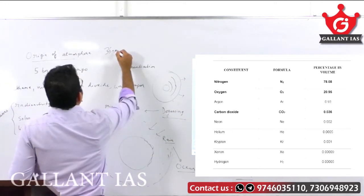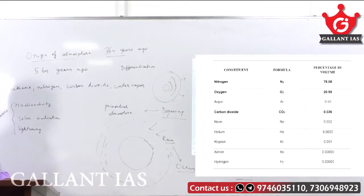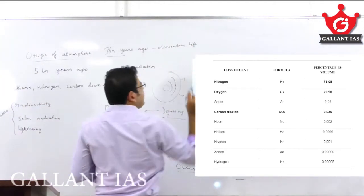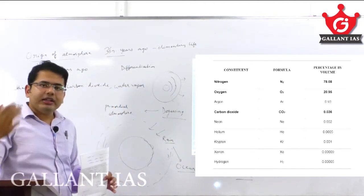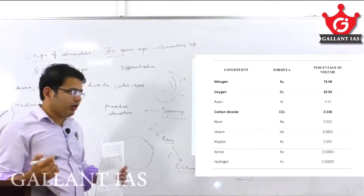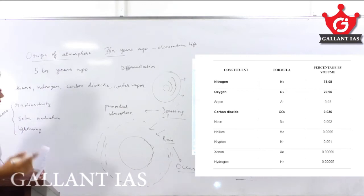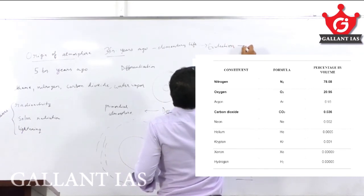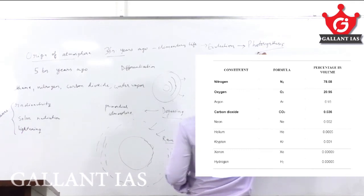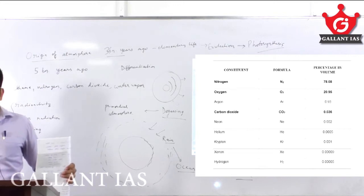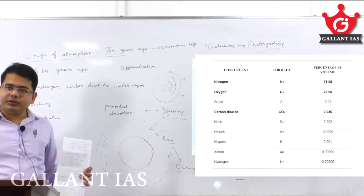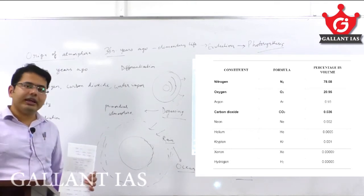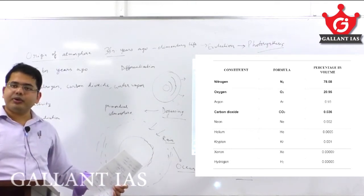About 3 billion years ago, life started because oceans were there. Initially life started as a very elementary form — very simple organisms. Gradually they evolved over a course of years, and after that the process of photosynthesis began. Elementary life evolved, and then photosynthesis took place. After photosynthesis, CO2 was consumed, because photosynthesis is the uptake of CO2 — a biological process involving chlorophyll-containing organisms like plants — which make their own food using sunlight and CO2. The byproduct is oxygen.